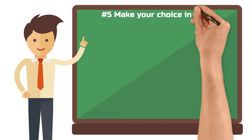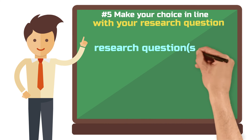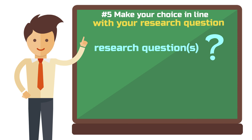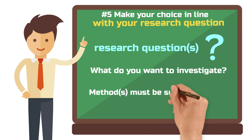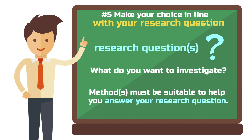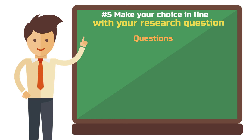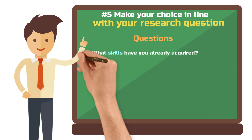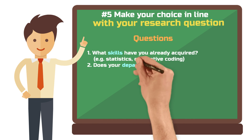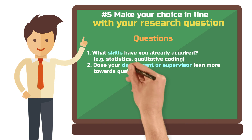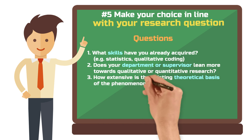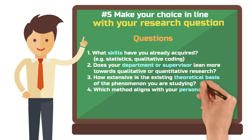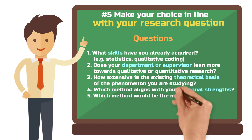Step 5: make your choice in line with your research question. The research question plays a crucial role in selecting the right method. You must first know what you want to find out before deciding on a method. Here are five questions that can help: What foundational skills have you already acquired, for example in statistics or qualitative coding? Does your department or supervisor lean more towards qualitative or quantitative research? How extensive is the existing theoretical basis of the phenomenon you are studying? Which methods align with your personal strengths — are you good with numbers or more of a creative writer? And which method would be the most enjoyable for you?